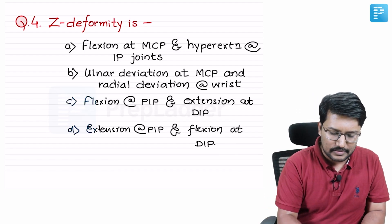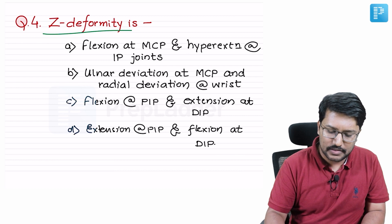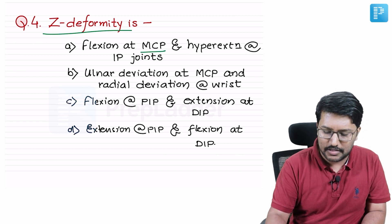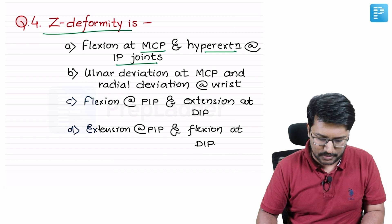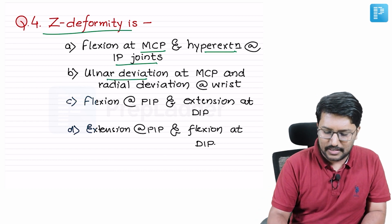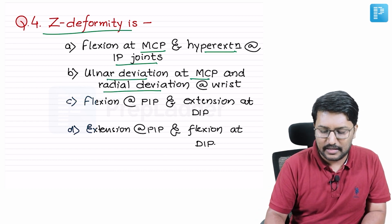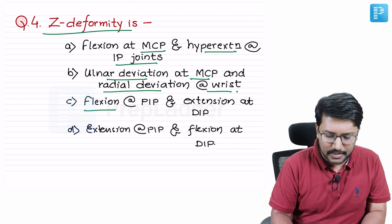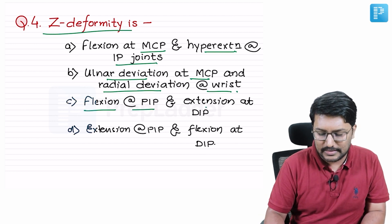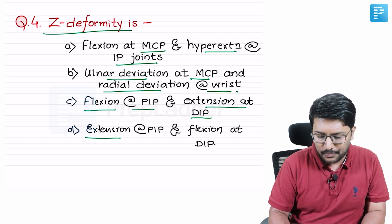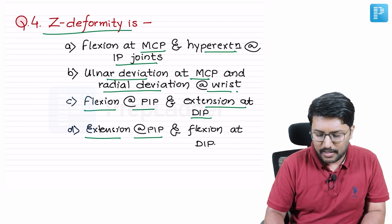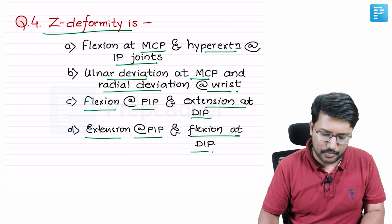Z deformity options are: flexion at metacarpophalangeal joint and hyperextension at interphalangeal joint; ulnar deviation at metacarpophalangeal joint and radial deviation at wrist joint; flexion at proximal interphalangeal joint and extension at distal interphalangeal joint; and extension of PIP and flexion of DIP.